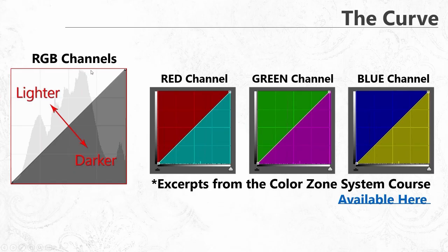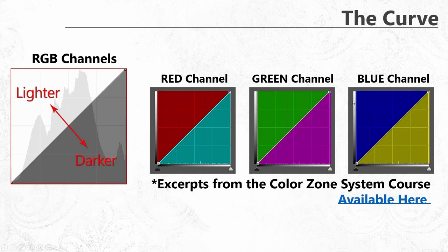This can also be done for color. In the RGB channel it makes your image lighter or darker. But if you go into the red channel and move it up, it makes your image more red; move it down and it gets more cyan. In the green channel, moving up adds green and moving down adds magenta. That's the complementary color system — the opposite of green is magenta, so if you take away green you're essentially adding magenta.